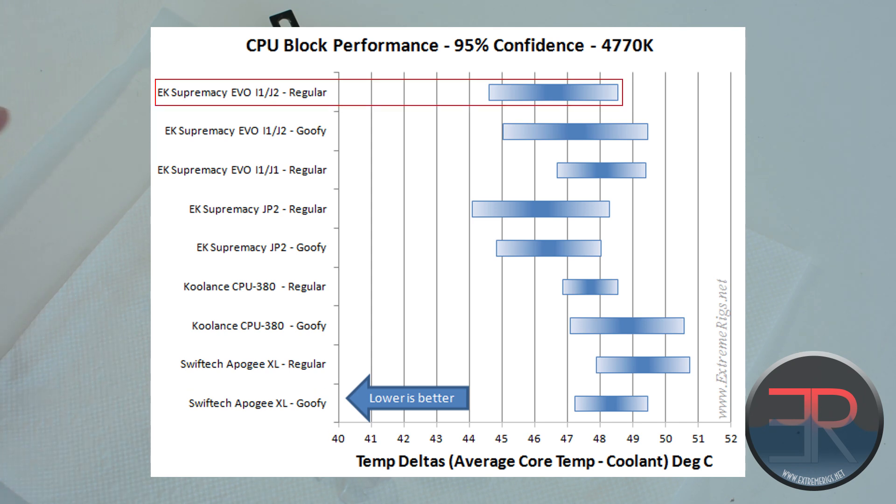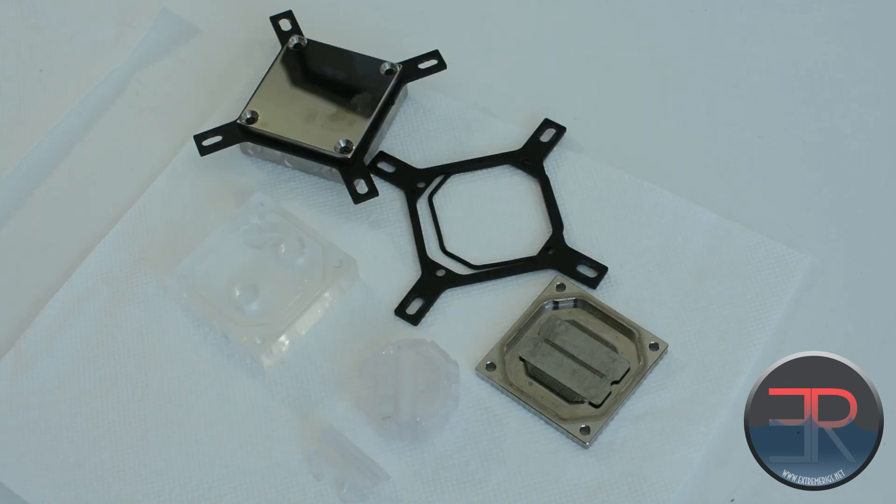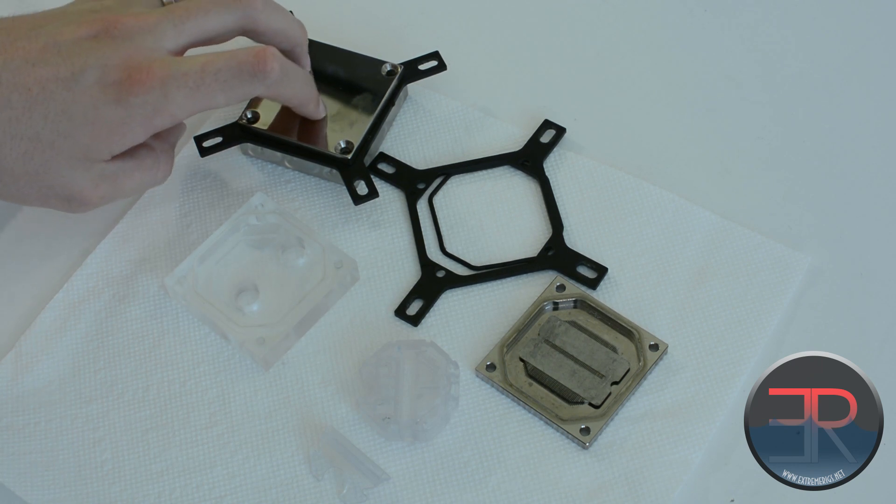It's just disappointing that we didn't see the results we expected. The Supremacy was already the best block in my 4770K testing when you use JetPlate 2. So to see something that's not quite as good, you're kind of like, eh, I'm not that excited. But at the same time, it's still going to be recommended because it is still the best you can buy. Because, guess what, you can't buy the Supremacy anymore.